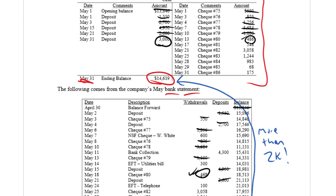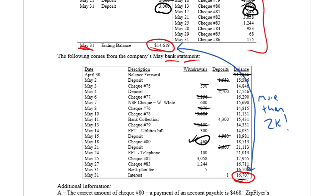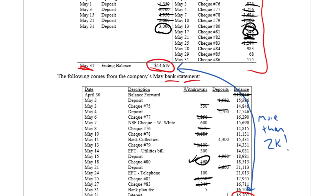Check number 81 for $5,48 — I don't see that one, so it's outstanding. $30,58 — that check has cleared. $12,44, check number 83 — that's cleared. And the last three, checks 84, 85, and 86, all look like they're outstanding. So checks 81, 84, 85, and 86 are outstanding — they haven't appeared on the bank statement.